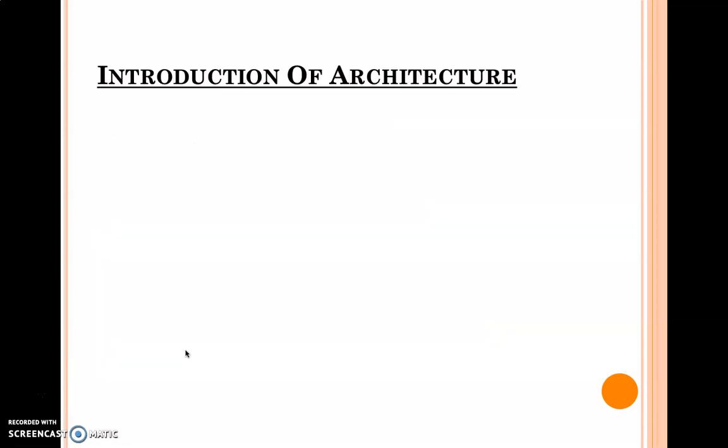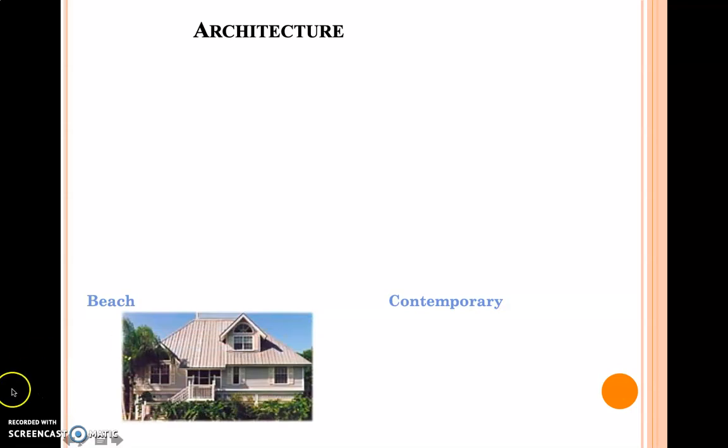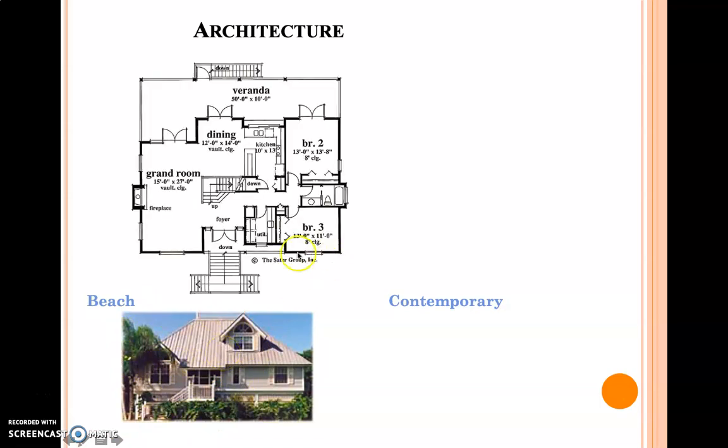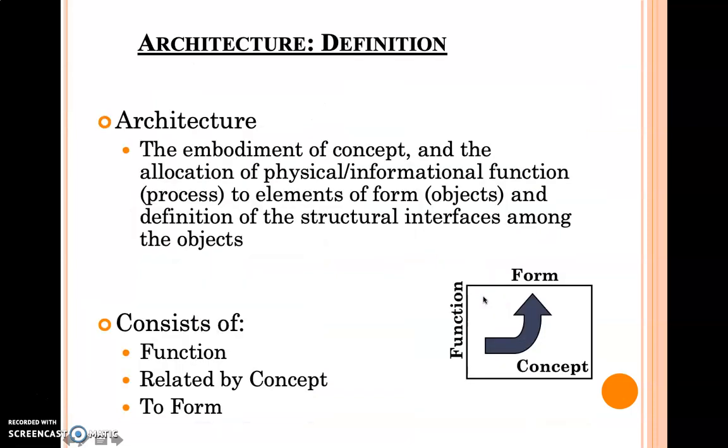So basically what is architecture? We are familiar with this word architecture. You will see this is a beach-based architecture home, so the architecture looks like this, not like this. This is a constructed view of any architecture model. Similarly, in contemporary kind of houses like this, this is the architecture. This is a perfect definition of architecture whenever you are designing or simulating the model in paper or in software.